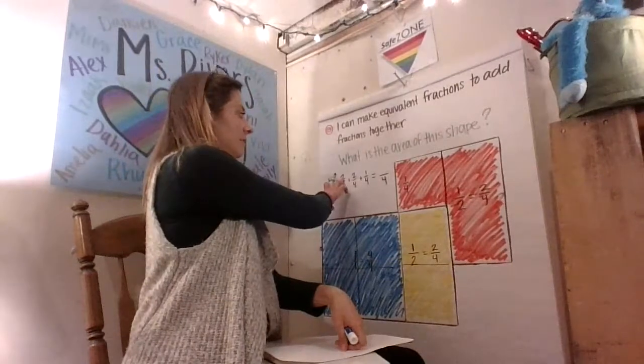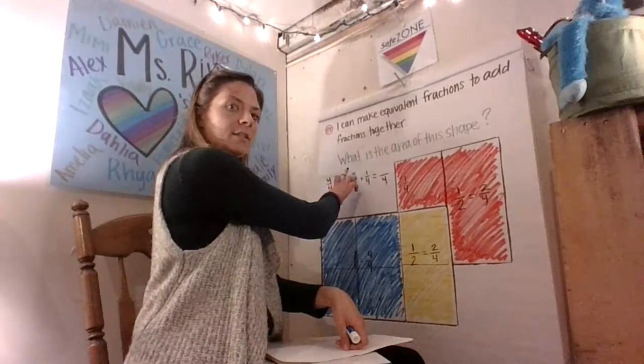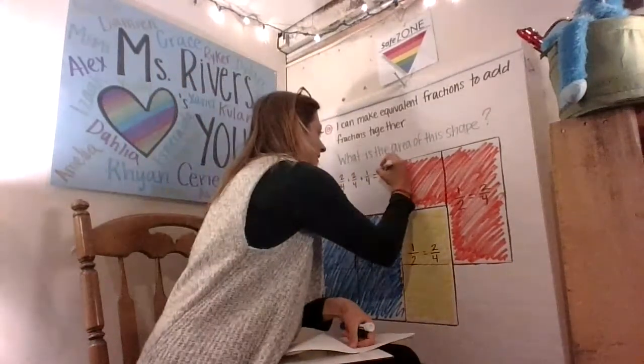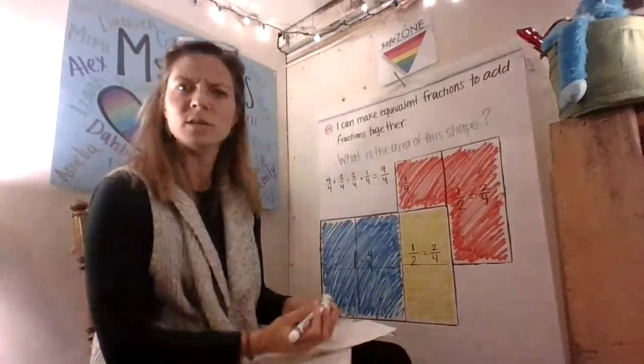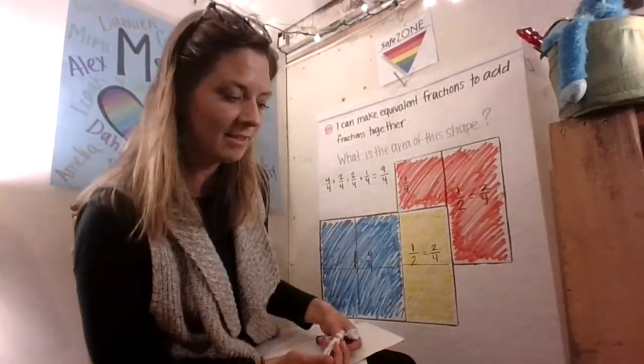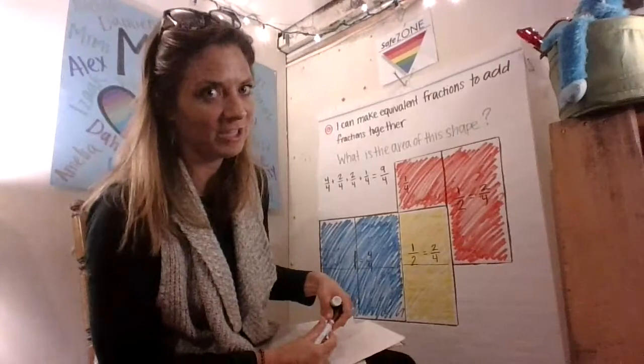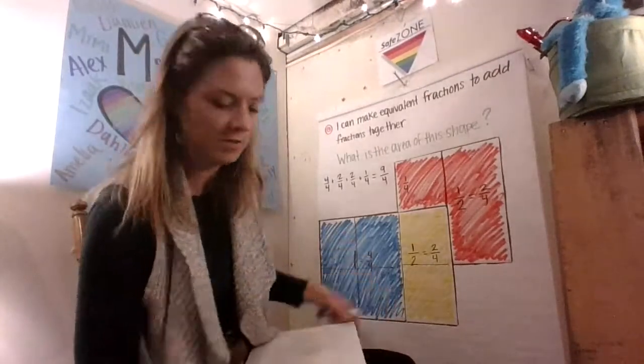Now I add all of my numerator, all of my pieces of my whole. Four plus two, six plus two, eight, nine, nine fourths. Is that a mixed number or an improper fraction? I'm going to show you on the number line.